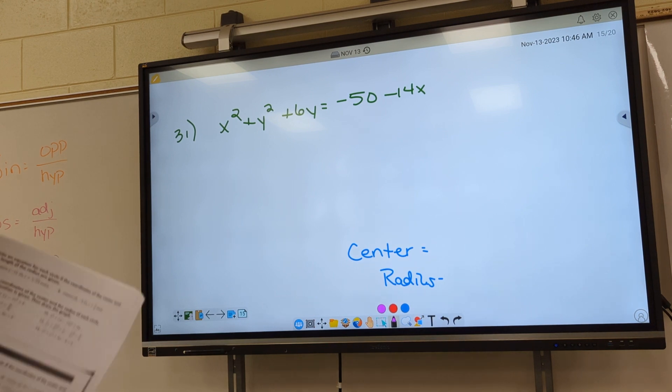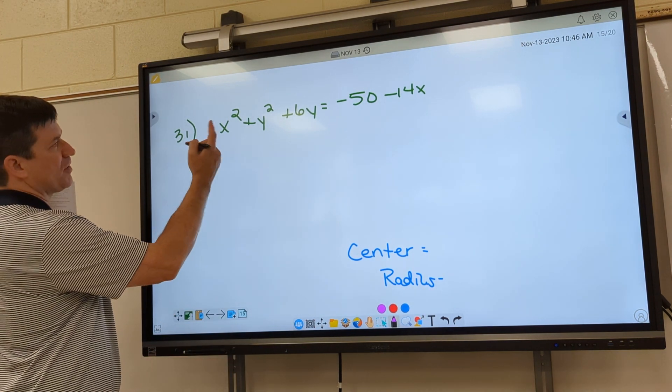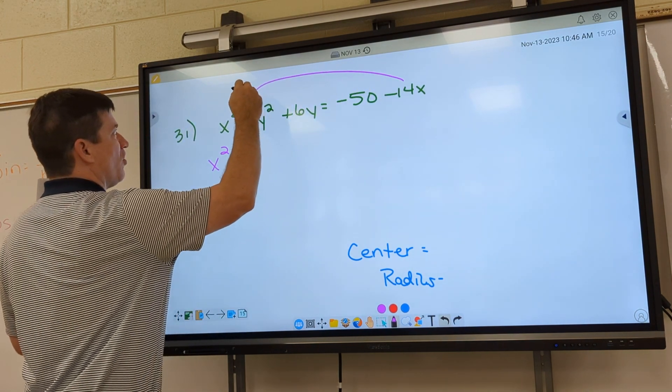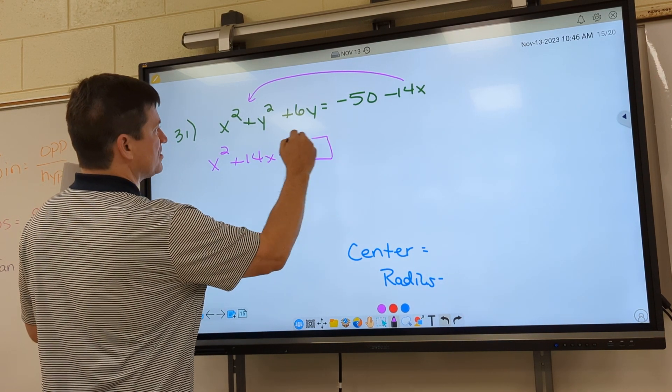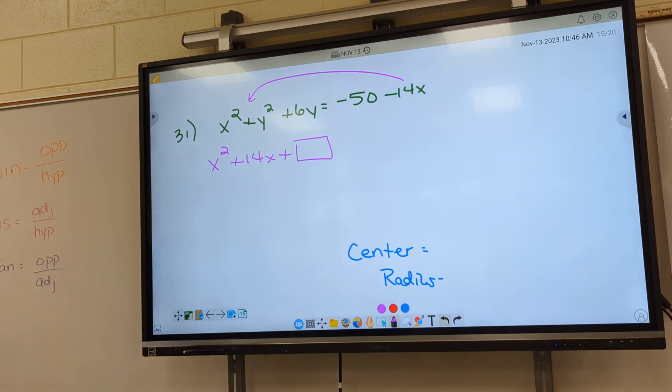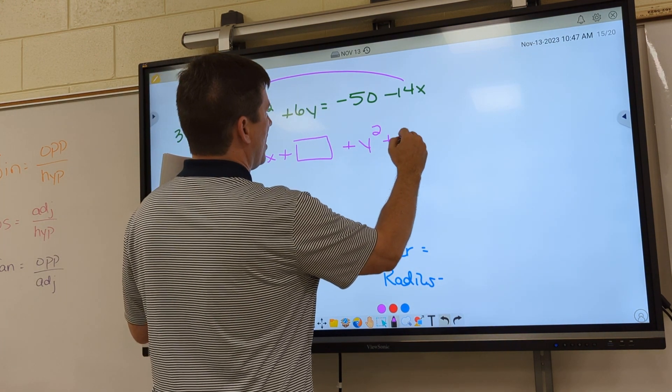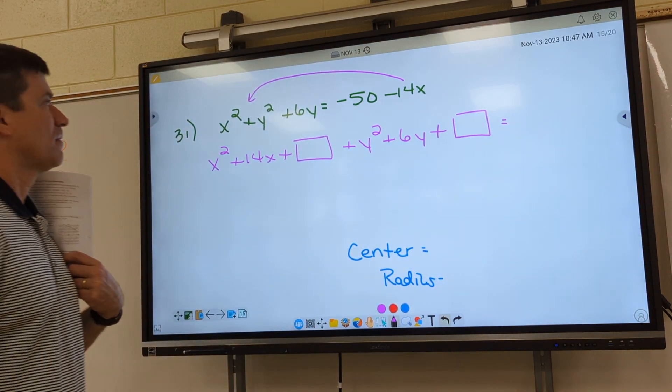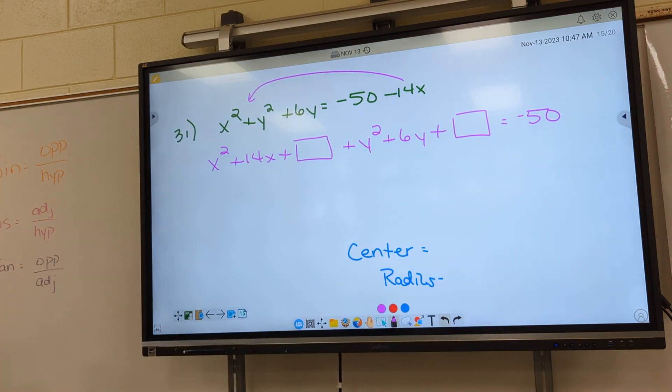31. When you write it down, let's go ahead and group them. All right. So look. This one was a little bit different. So I thought I'd show this one. I got my x squared. But look. I got to bring negative 14x all the way over. What happens to it? Change it to positive. And then you've still got your box. All right. Next, you've got y squared plus 6y. You've still got your box. All right. Negative 50 is there.